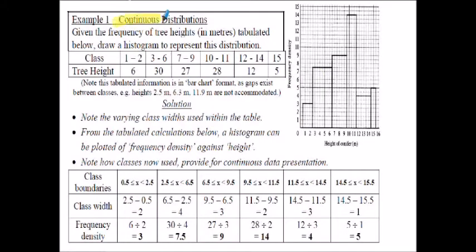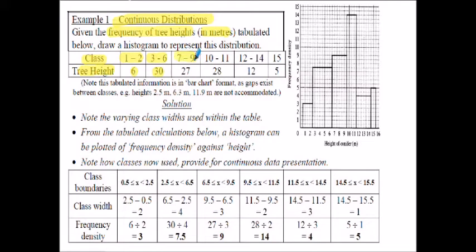This example looks at continuous distributions. What we've got here is a frequency of tree heights in meters tabulated below and we've got to draw the histogram. We're given classes and frequencies of tree heights - so a class of 1 to 2 meters where we've got 6 trees in that category, 3 to 6 meters with 30 trees, 7 to 9 meters with 27 trees, 10 to 11 meters with 28 trees, and so it goes on.